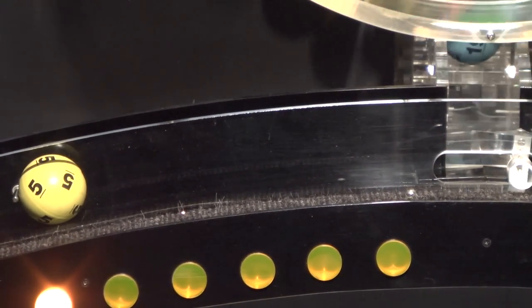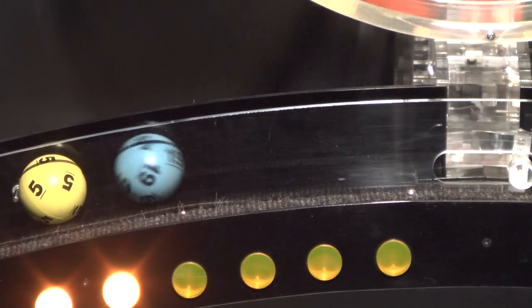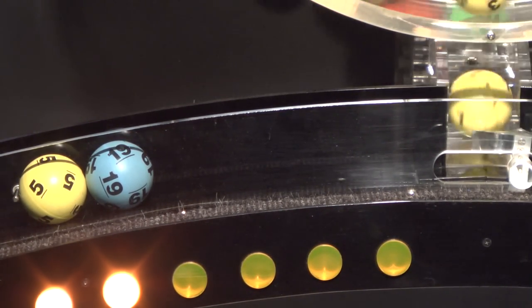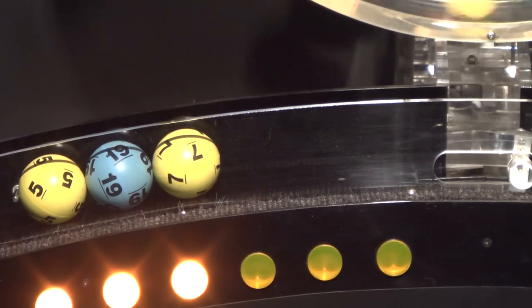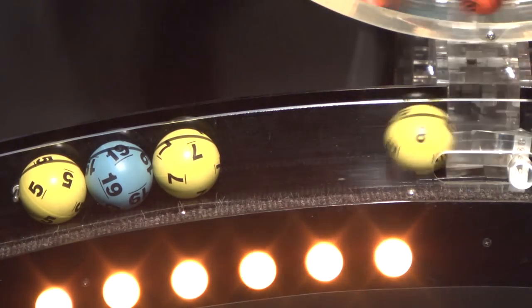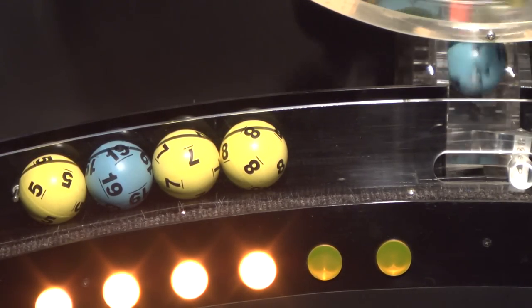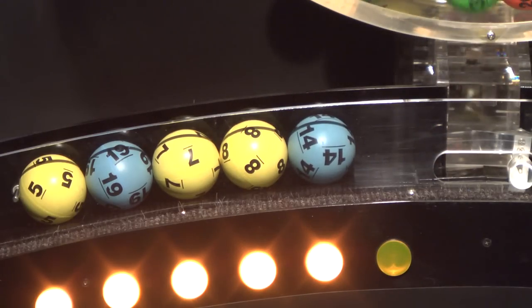First number is 5, and following that is 19. And then number 7, if you match these three numbers you've already won a prize. And there's 8, and finally 14.